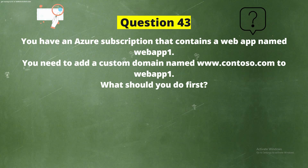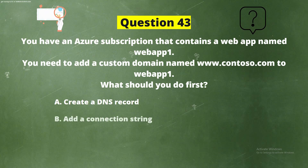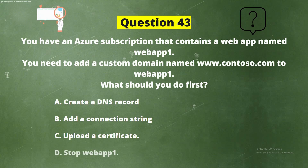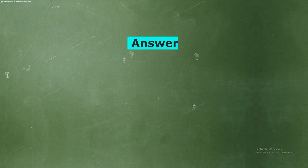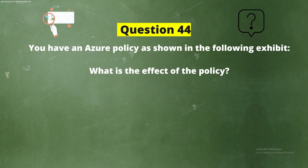Question 43: You have an Azure subscription that contains a web app named WebApp1. You need to add a custom domain named www.contoso.com to WebApp1. What should you do first? Option A: Create a DNS record. Option B: Add a connection string. Option C: Upload a certificate. Option D: Stop WebApp1. The correct answer is Option A: Create a DNS record. Explanation: You can use either a CNAME record or an A record to map a custom DNS name to App Service.